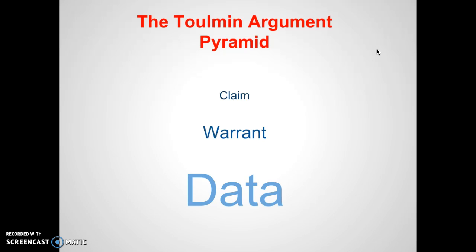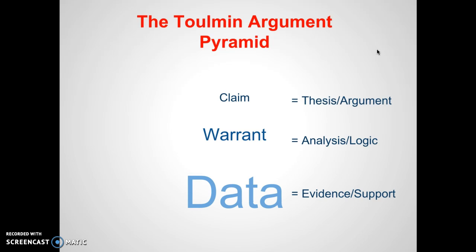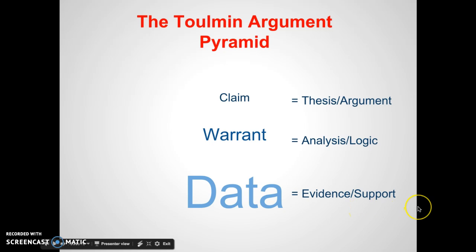Toulmin argued that there are three aspects to any good argument: data, warrant, and claim. These are terms that you're at least conceptually aware of, at least in a different form. Instead of calling it a claim, we can call it your thesis or your argument. Instead of calling it a warrant, we can call it your analysis or logic. And instead of data, we can just call it your evidence or your support.